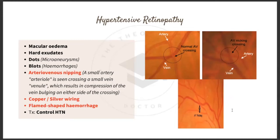Hypertensive retinopathy is caused by uncontrolled hypertension. Features include macular edema, hard exudates, dots (micro-aneurysms), blots (hemorrhages), and arteriovenous (AV) nipping — which is what differentiates hypertensive retinopathy from diabetic retinopathy. AV nipping refers to compression of the vein where an artery crosses over it.